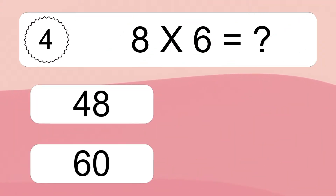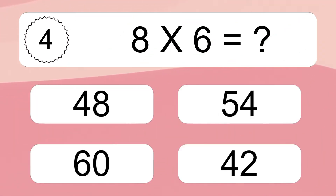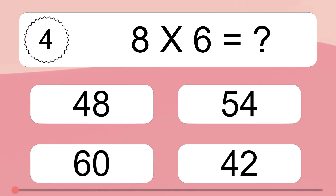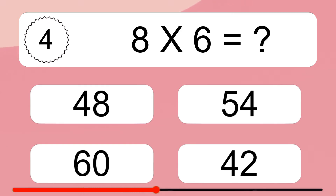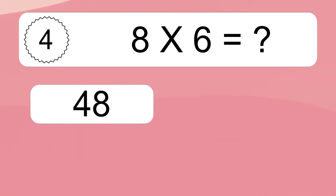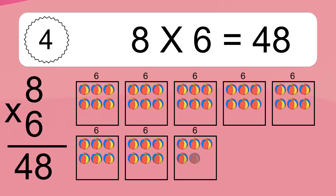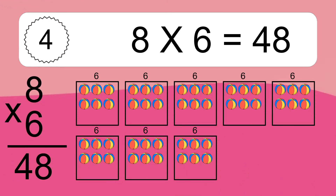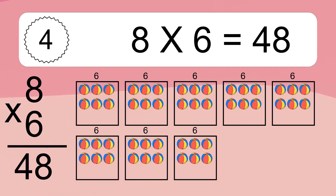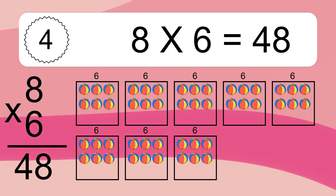Eight times six equals what? Eight times six equals forty-eight. We have eight boxes and each box has six colorful balls inside. If you count all the balls in all the boxes together, you will have eight times six balls. This equals forty-eight balls.